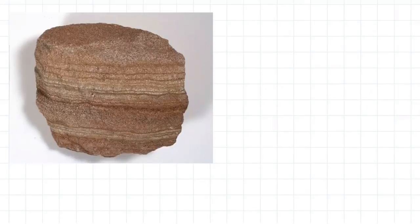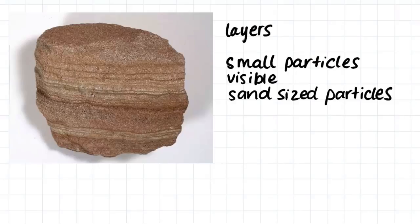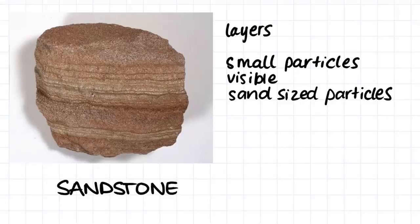Alright, so here's our first sample. We can see that this sample has layers and these layers come from the fact that the sediment has been laid down in horizontal beds. We can also see that this sample is made up of quite small particles, although they're still visible to the naked eye. I would say that these are sand sized particles. Therefore, we have a sandstone.